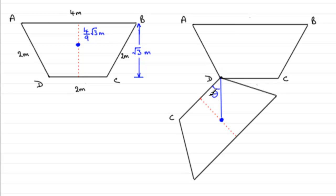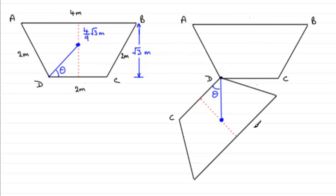Let's call it theta. On this diagram, if we were to draw a line back to the center of mass, that angle that we're looking for is here. With practice you don't have to draw this kind of thing — you should be able to just see it by drawing your line to the center of mass.